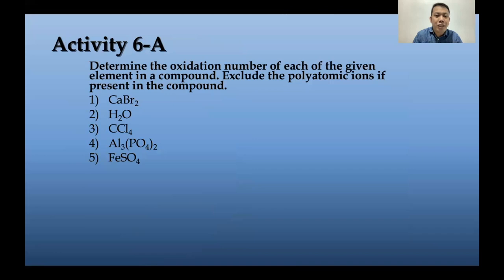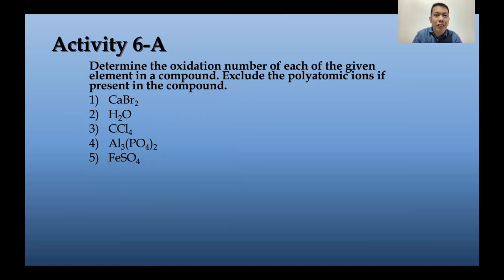For your review on this topic, determine the oxidation number of each given element in a compound. Exclude the polyatomic ions if present — just find the mono-atomic elements. You can pause this video to go back to the previous discussion if needed, or look for other videos to satisfy your needs on this topic.